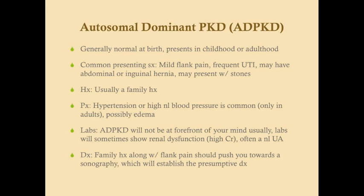Autosomal dominant polycystic kidney disease — the later presenting PKD — patients are generally normal at birth and it usually presents in childhood or adulthood. Common presenting symptoms are mild flank pain, frequent urinary tract infections, and it can present with stones. These patients may also have a history of abdominal or inguinal hernia. It's usually not going to be at the front of your mind, and you'll combine symptoms with history and physical to develop the diagnosis.